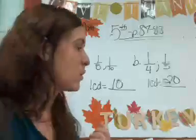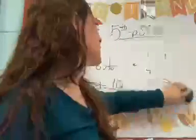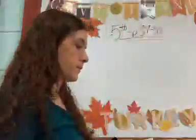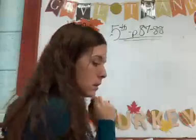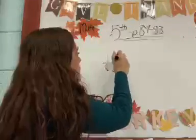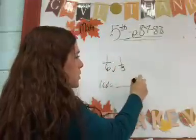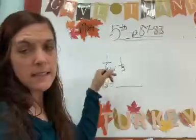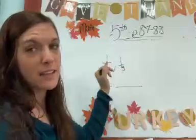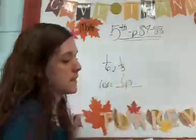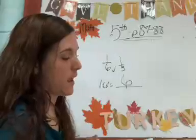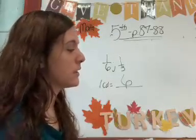This is an easy one actually. Factors of six: 6, 12, 18. Factors of three: 3, 6, 9, 12. What's your least common denominator? Six. And you can do letter D by yourself.